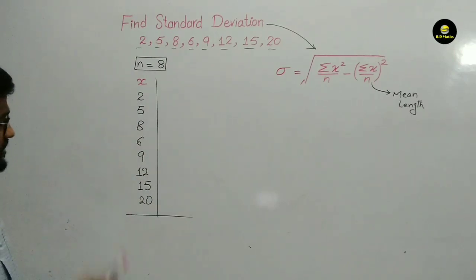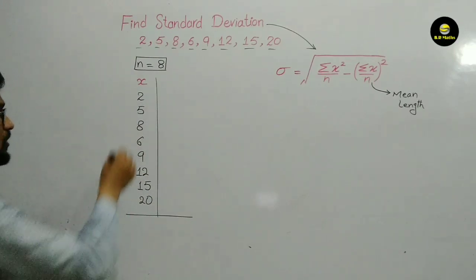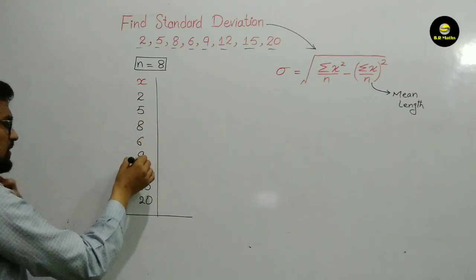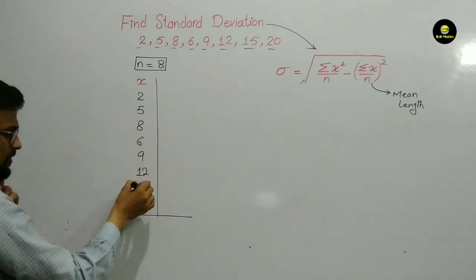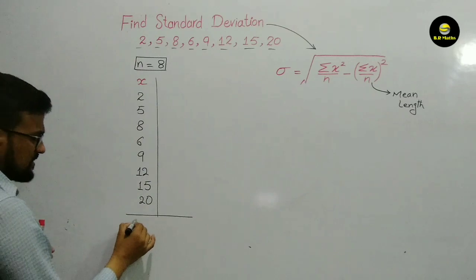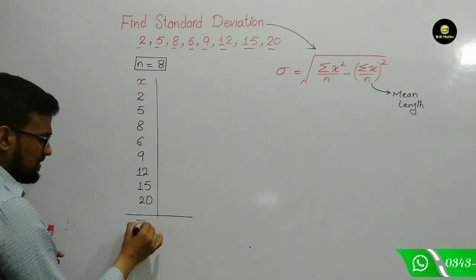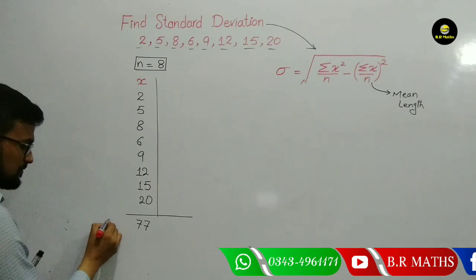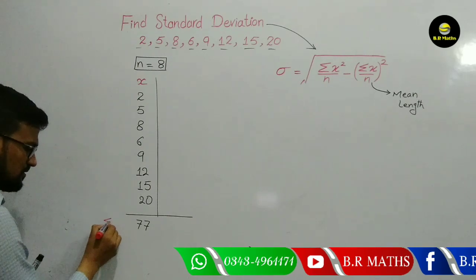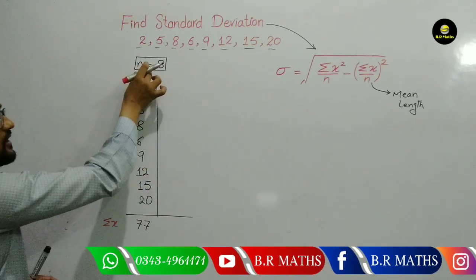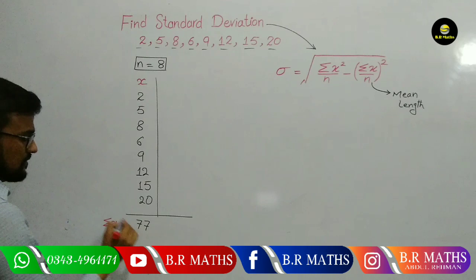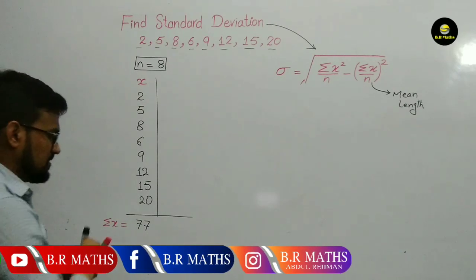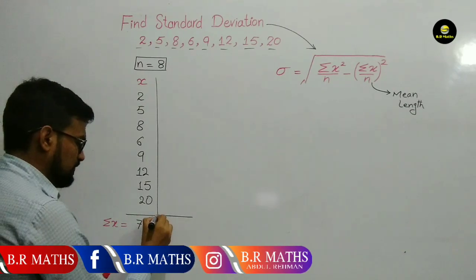So these are the total 8 observations: 2, 5, 8, 6, 9, 12, 15, and 20. Now calculate the sum of all these values: 2 + 5 = 7, + 8 = 15, + 6 = 21, + 9 = 30, + 12 = 42, + 15 = 57, + 20 = 77. This is called the summation of x.